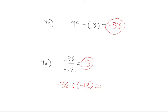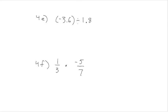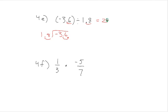Problem 4e is negative 3.6 divided by 1.8. We can visualize this as 36 divided by 18 by moving the decimal points. We know there are two 18s in 36, so 36 divided by 18 equals 2. Since one of them is negative, the answer is negative 2.